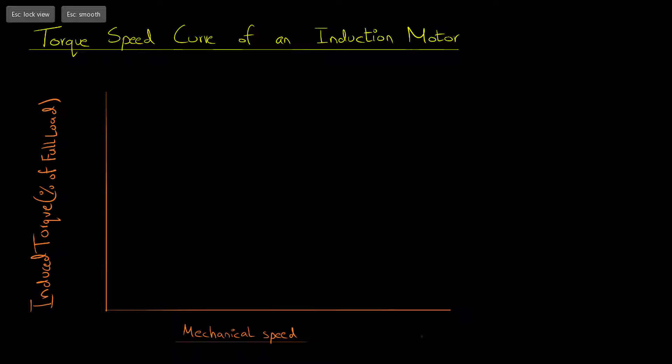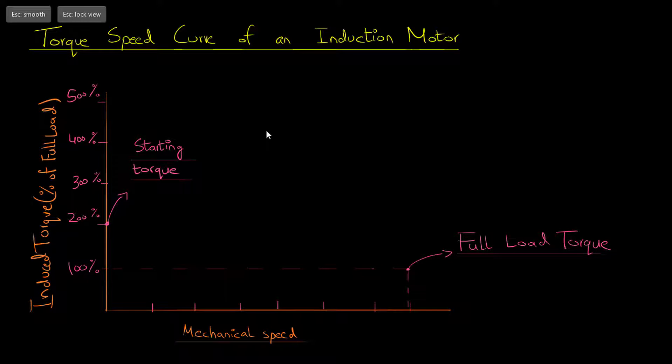Following this curve from the very beginning, we can see that the starting torque of an induction motor is almost 200% of its full load torque, or we can say that the starting torque is slightly greater than the full load torque. This curve increases linearly up to the level of the pullout torque.